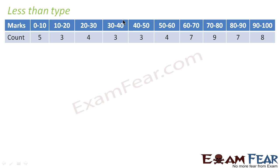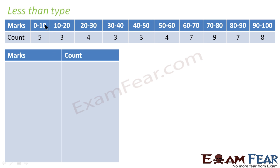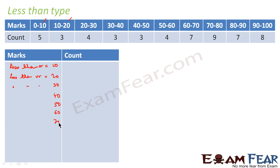Let's start with the less than type graph. For this we write the upper class limits: less than or equal to 10, less than or equal to 20, and so on up to 100. For less than or equal to 10, the only value that falls here is 5, so we write 5.